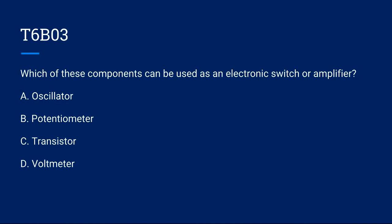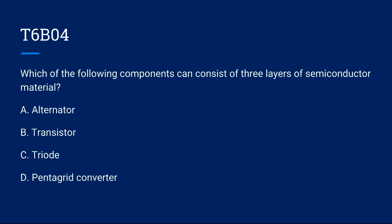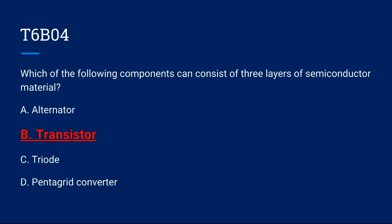T6B03: Which of these components can be used as an electronic switch or amplifier? A, oscillator. B, potentiometer. T6B04: Which of the following components can consist of three layers of semiconductor material? A, alternator. B, transistor. C, triode. Or D, pentagrid converter? The correct answer is B, transistor.